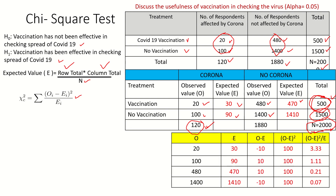We arrange all values in a table: observed values, then expected values, then O minus E, then (O minus E) squared. The observed values are 20, 100, 480, and 1400. The expected values are also written. Then O minus E: 20 minus 30 equals minus 10; 100 minus 90 equals plus 10; and similarly for the other cells.